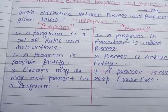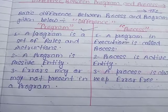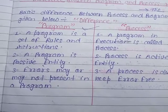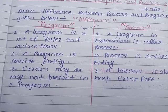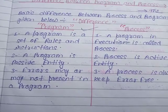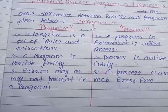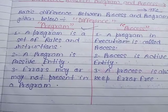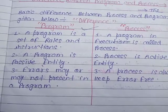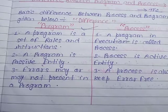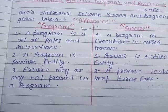A user can perform any operation on a process, not a program. This is the basic difference. When a program is executed by a processor, it becomes a process. The simple definition is: a program in execution is called a process.